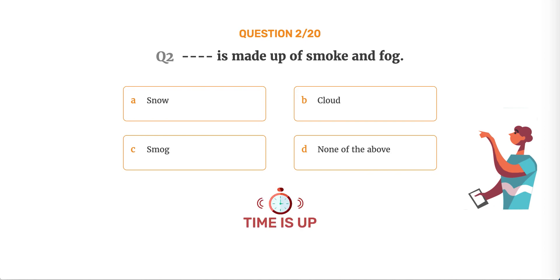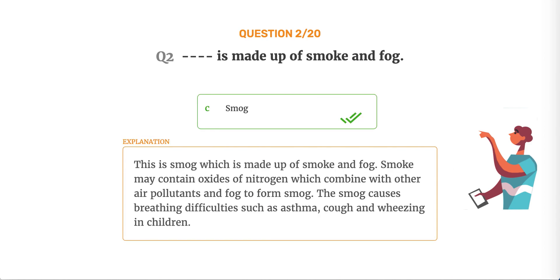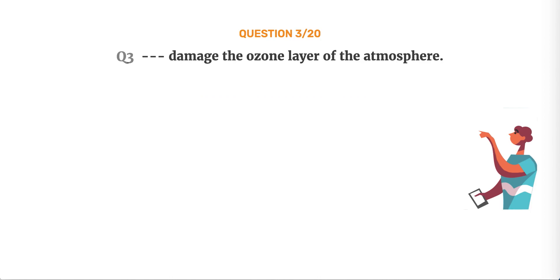The correct answer is Option C, Smog. This is smog, which is made up of smoke and fog. Smoke may contain oxides of nitrogen which combine with other air pollutants and fog to form smog. Smog causes breathing difficulties such as asthma, cough and wheezing in children.